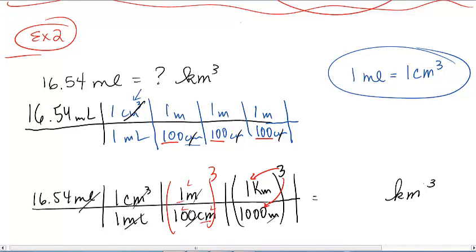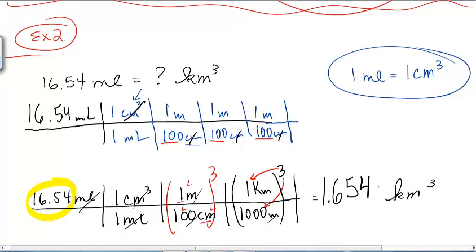Mr. Woods and I confirmed we got the same answer. I got 1.654 — but how many significant figures do I need in my final answer? Looking back at the beginning, we have four significant figures in our original measurement, so we need four significant figures again. So the answer is 1.654 times 10 to the negative 14th kilometers cubed.